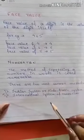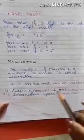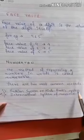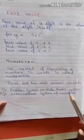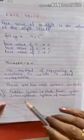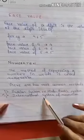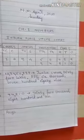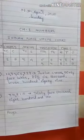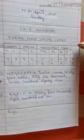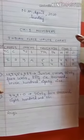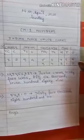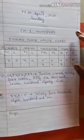Basically, we are going to learn about two common methods of numeration. First is the Indian system, or Hindu-Arabic system, and the second is the International system. Now children, see here — I have made an Indian place value chart.